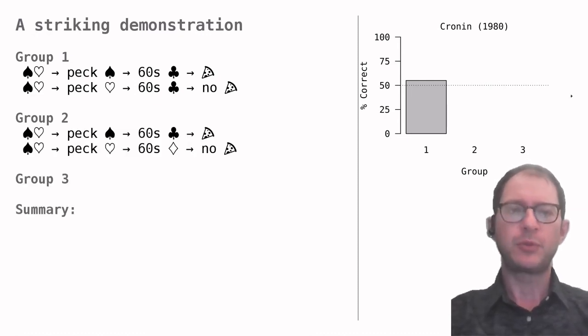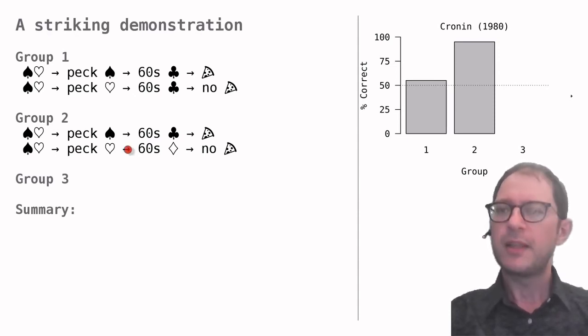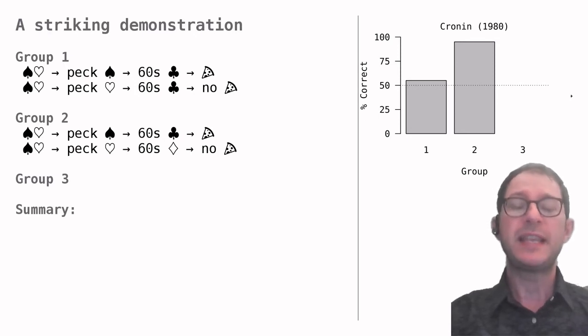Let's look now at the second group of pigeons. These pigeons learned to peck correctly over 90% of the time. The training procedure for these pigeons had only one difference. Right and wrong pecks turned on different stimuli, here indicated as clubs and diamonds. Following a peck to spades, you get clubs, and following a peck to hearts, you get diamonds. But why did this help the pigeon? After all, the second stimulus does not help the pigeon remember what it had pecked. At the time the reward comes, the peck is still 60 seconds in the past, and so it has been forgotten.